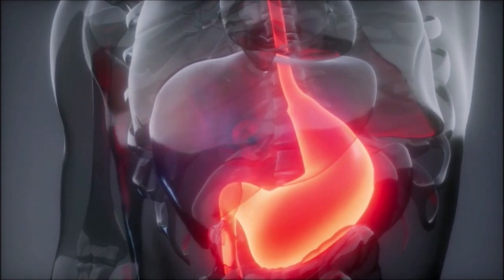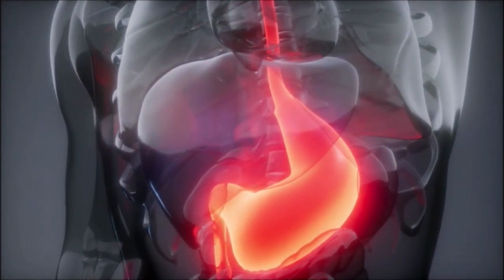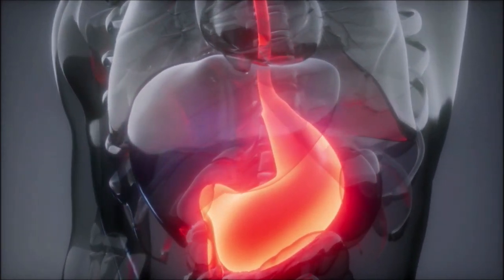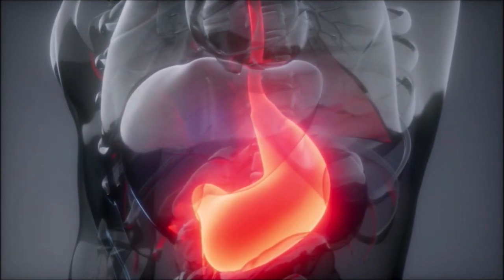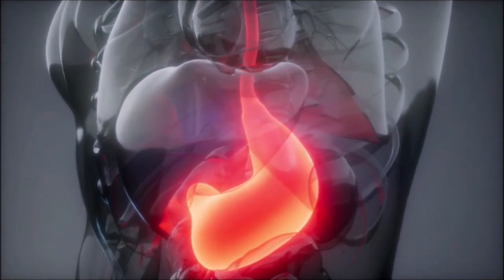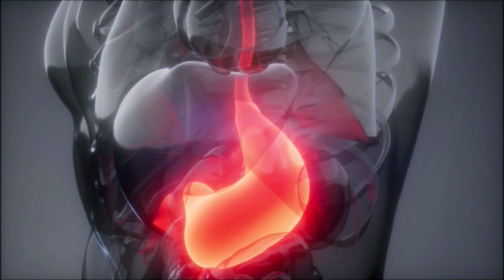The stomach works as a storehouse for food. This is where partial digestion occurs. The stomach wall secretes gastric juices.